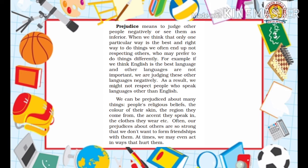We can be prejudiced about many things: people's religious beliefs, the color of their skin, the region they come from, the accent they speak in, the clothes they wear, and so on. Often, our prejudice about others is so strong that we don't want to form friendships with them. At times, we may even act in ways that hurt them.